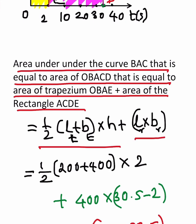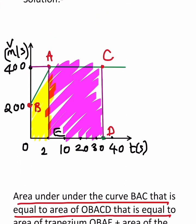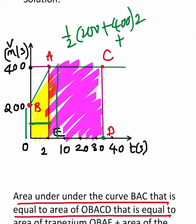So substitute all the values. You can very clearly see this is 200 and this is 400 of the trapezium. So half of (200 plus 400) into distance between them, which is 2, plus the rectangle, that is AC into DC.